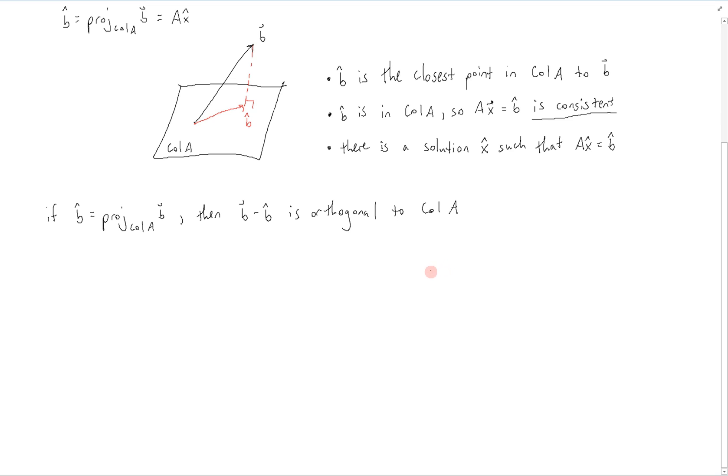This means that every column of a has to be orthogonal to b minus b hat. Suppose that we denote the matrix a as being composed of its individual columns, a1, a2, up to an, then we know that the dot product of a particular column, let's call it a sub j, with j being 1, 2, through n, the dot product of that with b minus b hat has to be 0, since that is a definition of orthogonality.